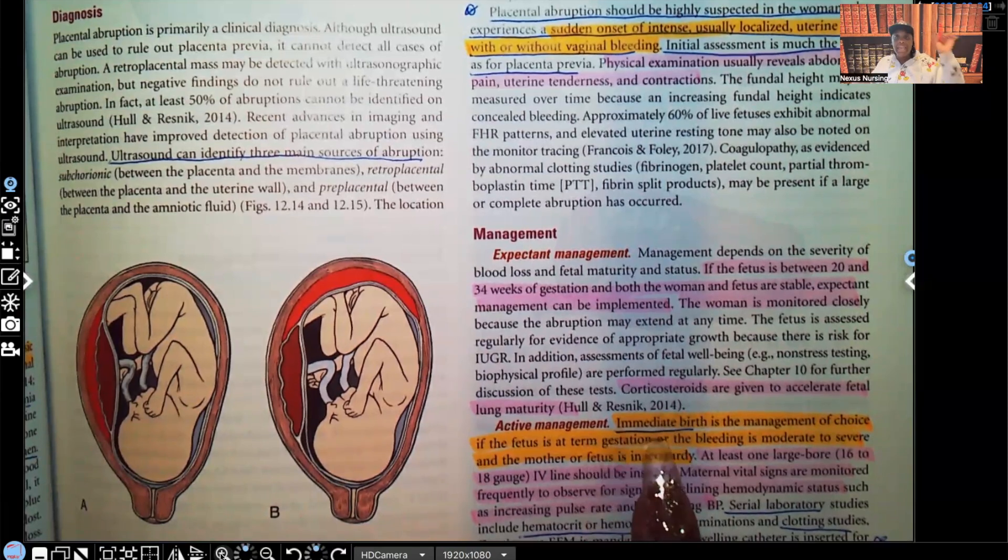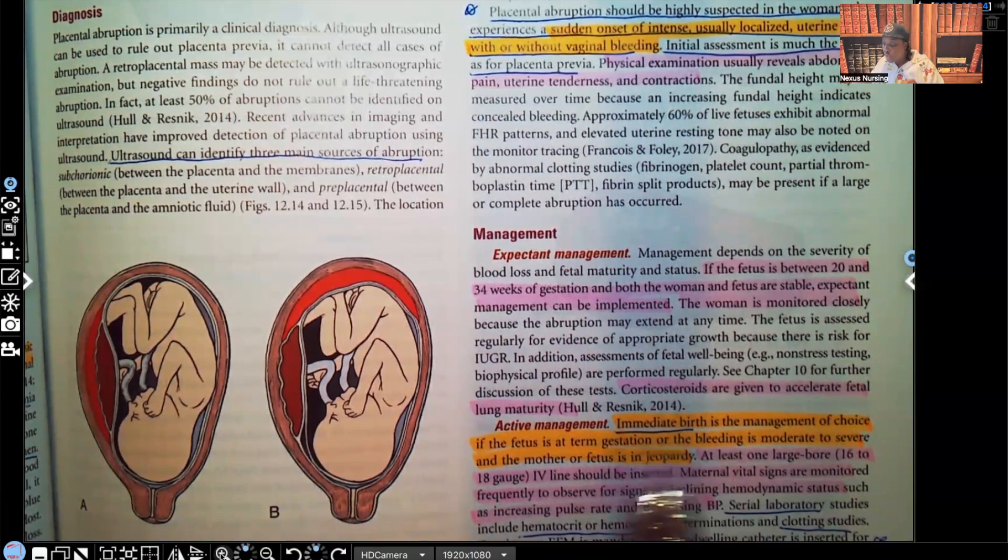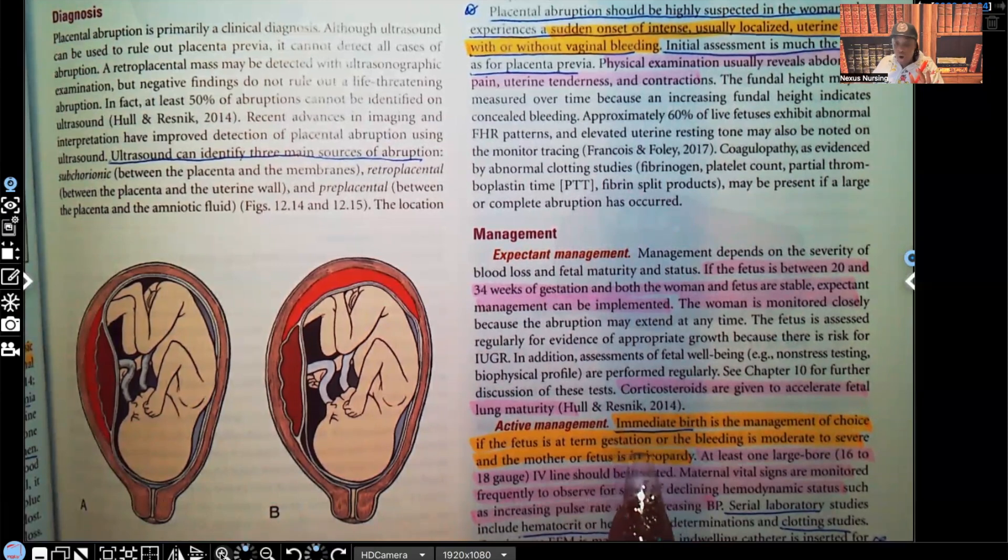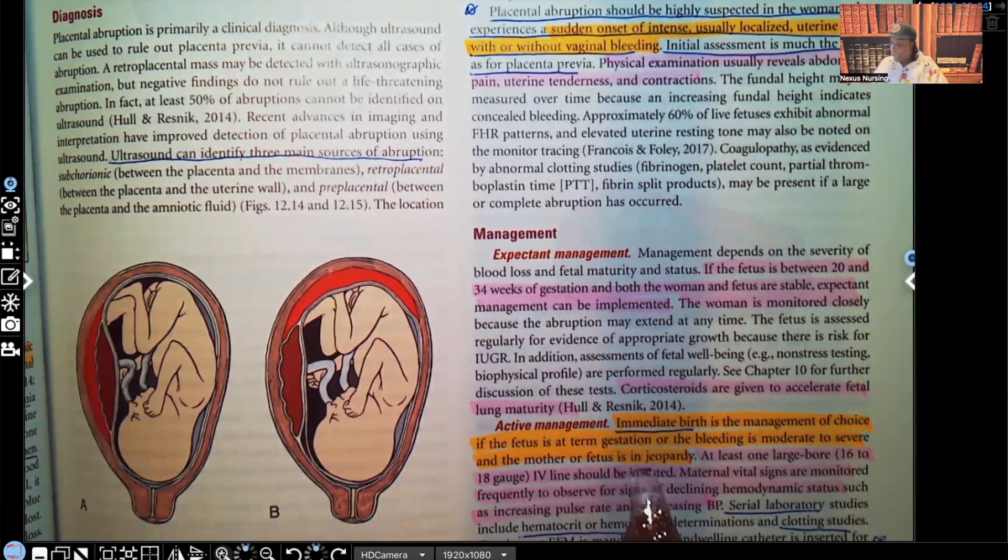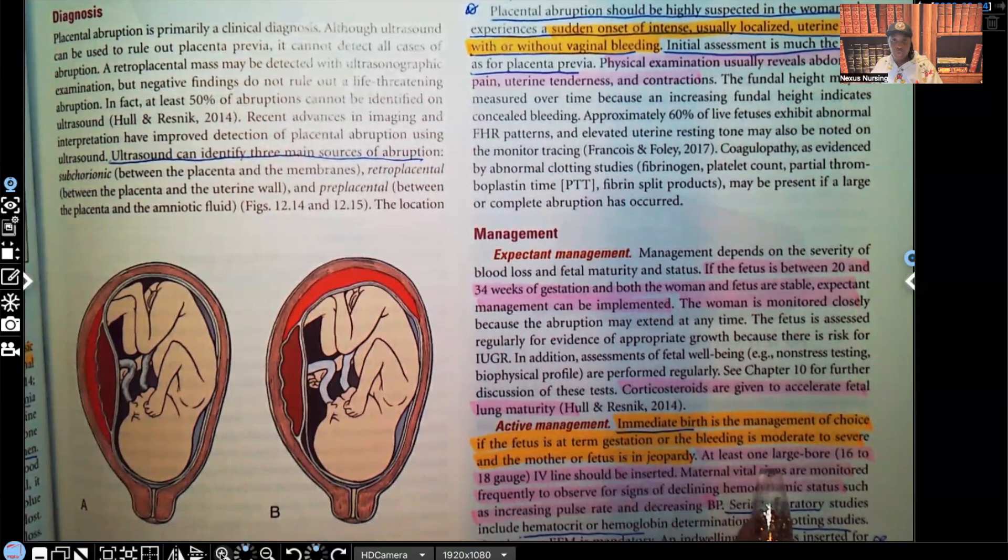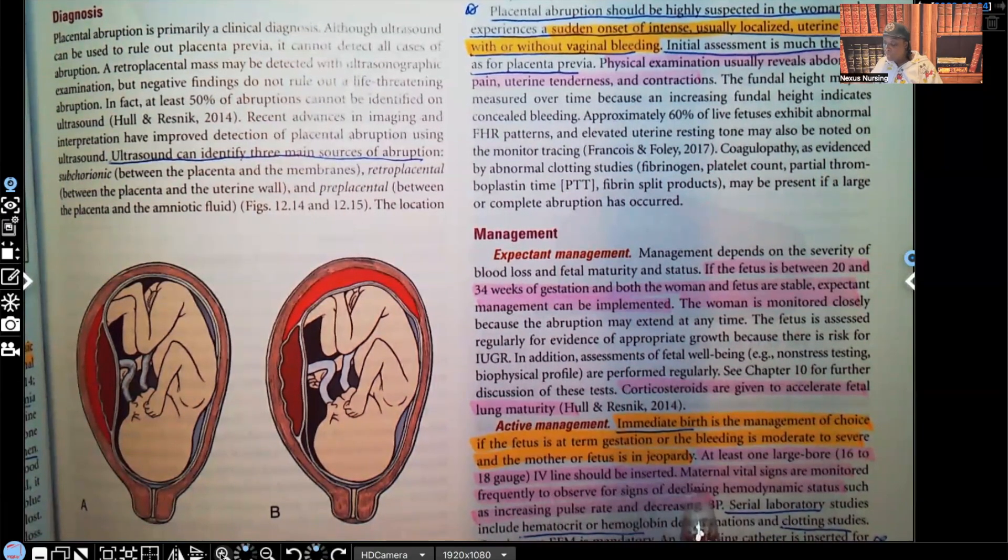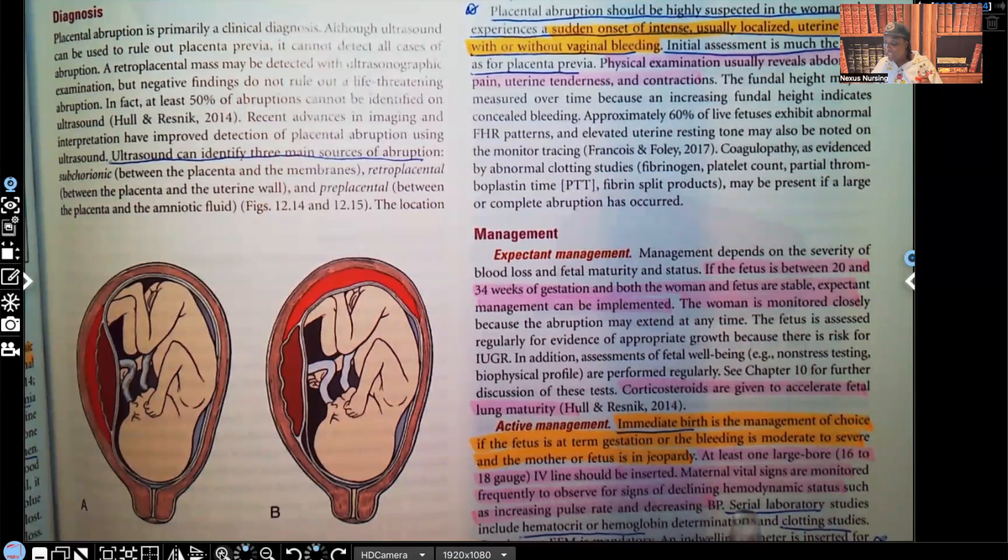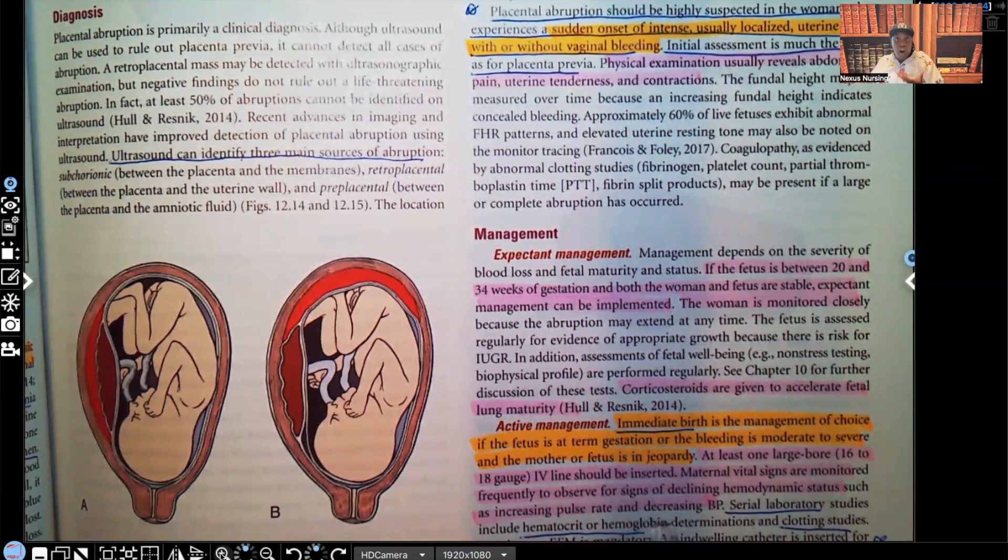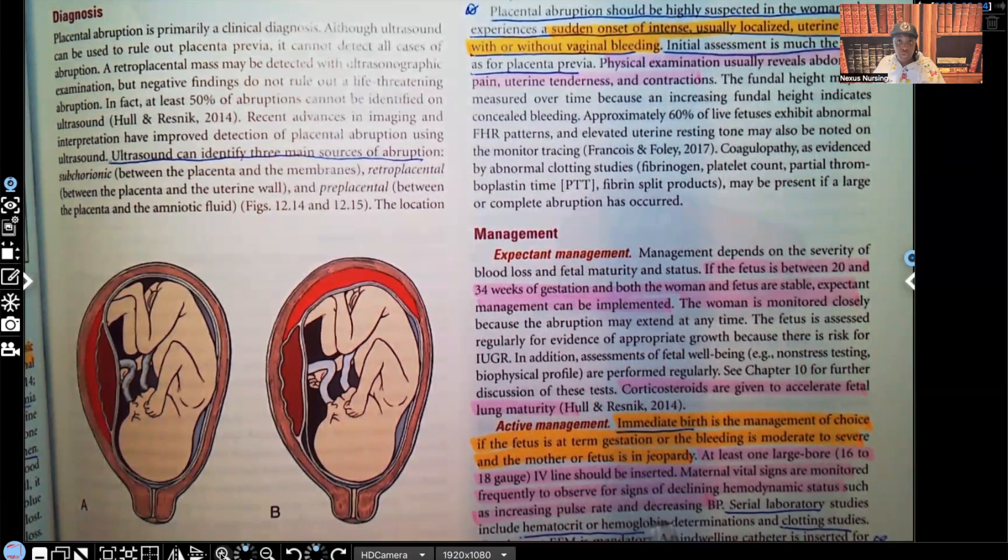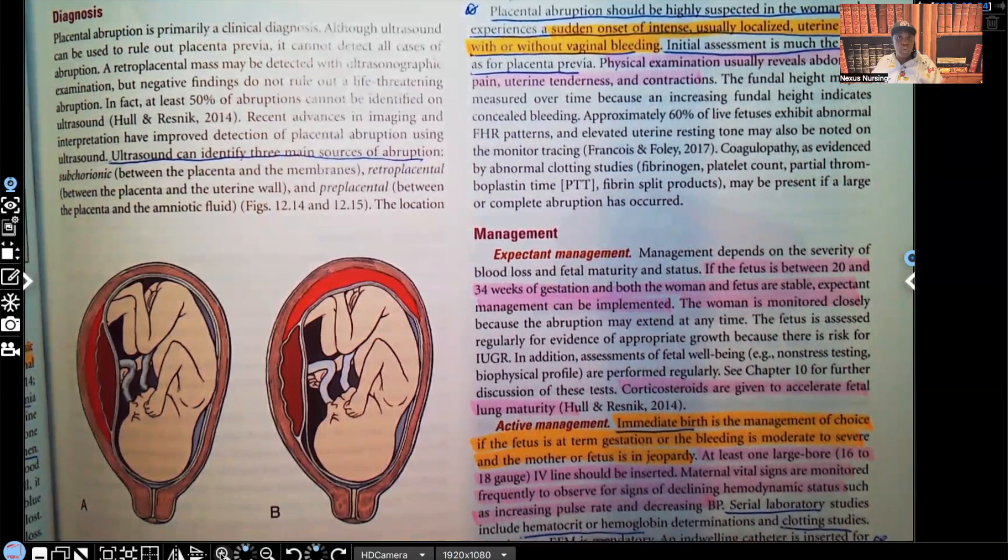How about active management? Immediate birth is the management of choice if the fetus is at full-term gestation or bleeding is moderate to severe and the mother or fetus is in jeopardy. At least one large bore, usually they'll put two, but at least one large bore 16 to 18 gauge IV line should be inserted. The maternal vital signs are monitored frequently to observe for signs of declining hemodynamic status, such as increasing pulse and decreasing blood pressure. When someone's bleeding out, you see the blood pressure go down and the heart's trying to compensate so you see the heart rate go up. And of course, you're looking at the urine output. You're going to see the urine output go down as well.